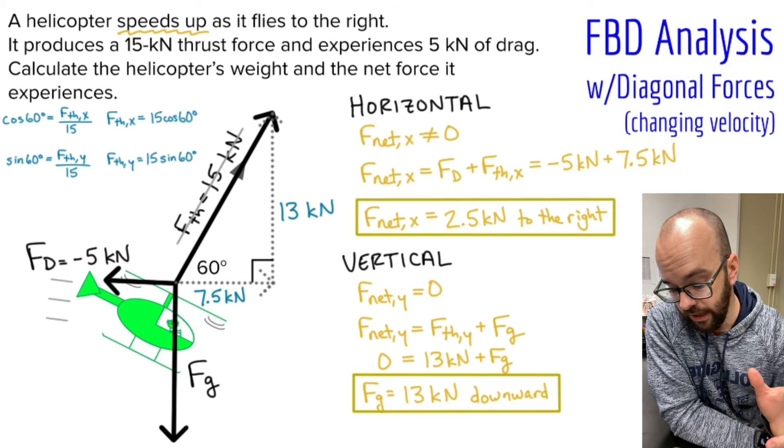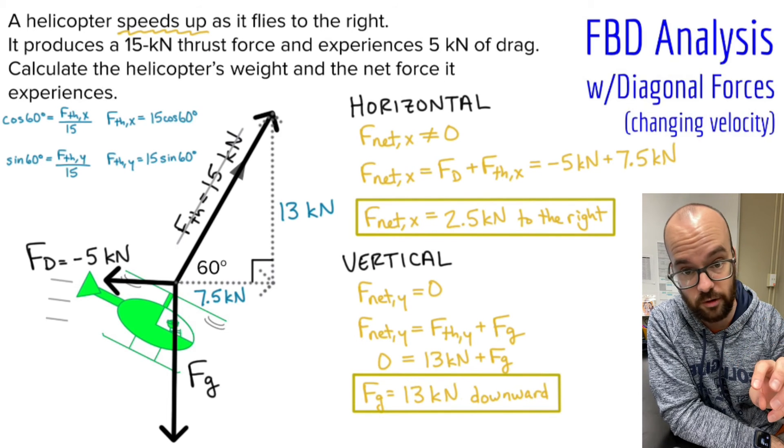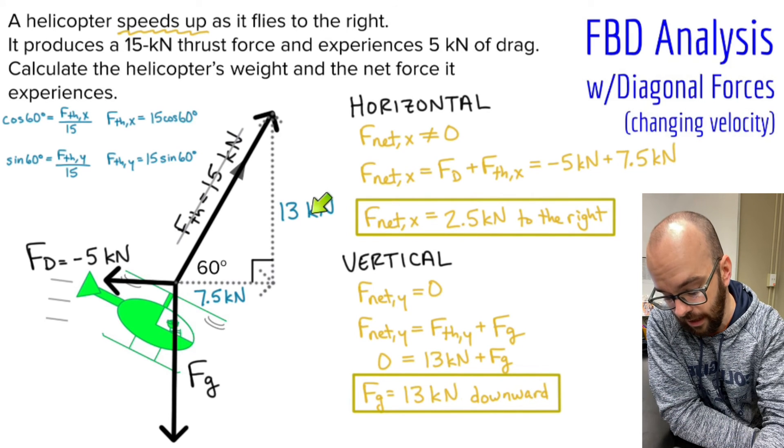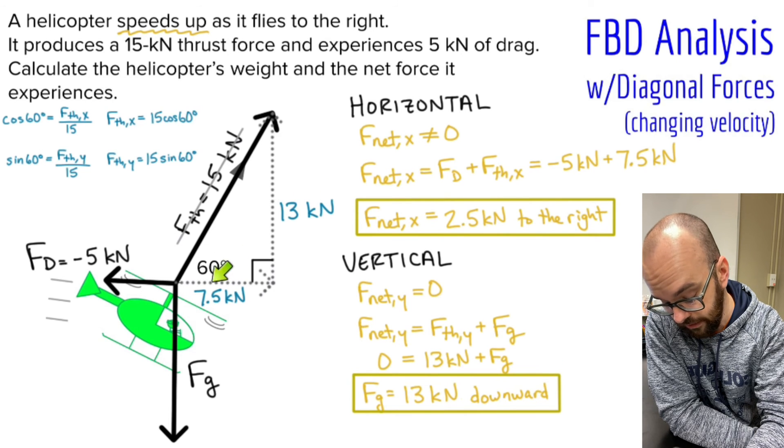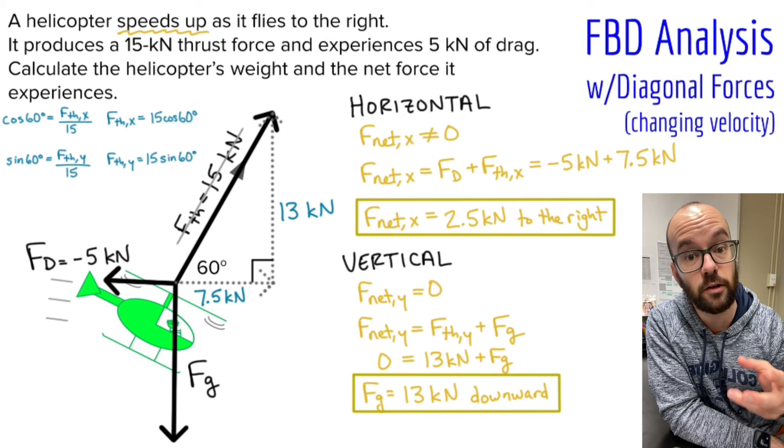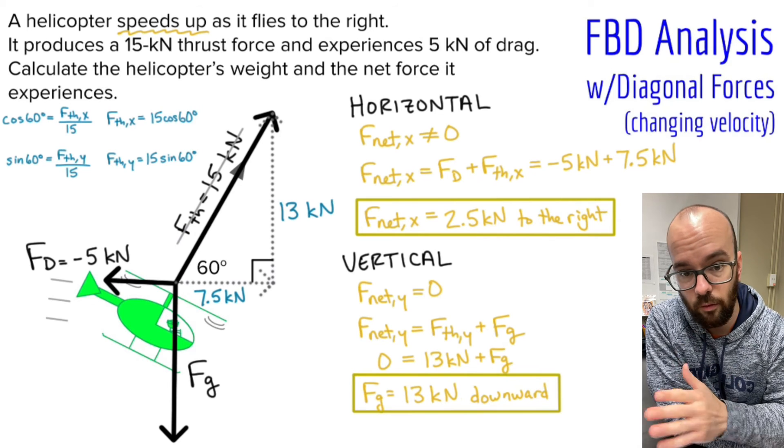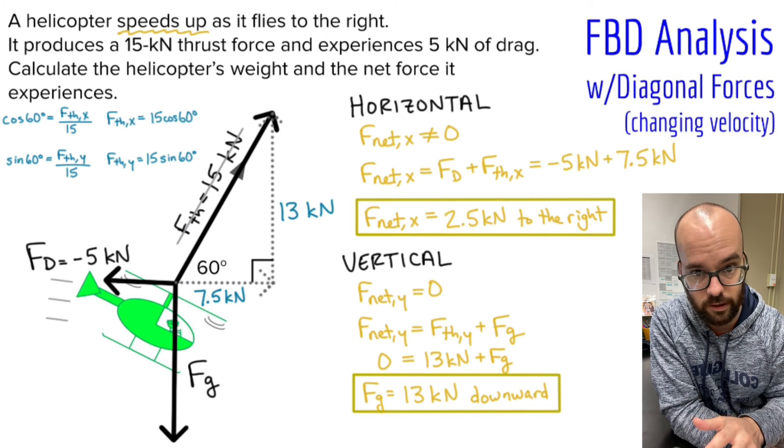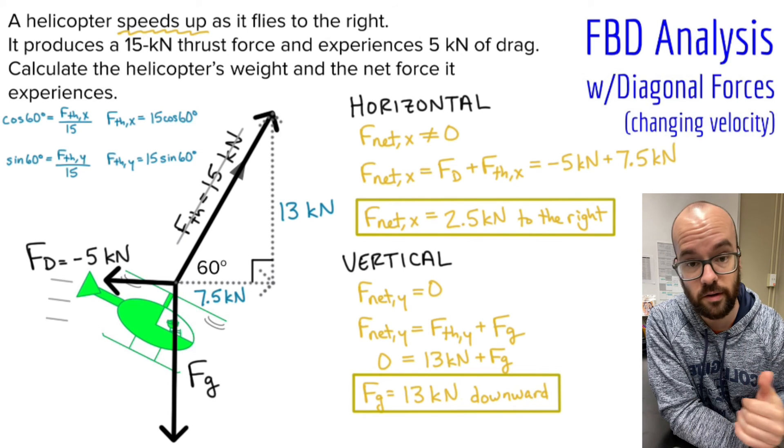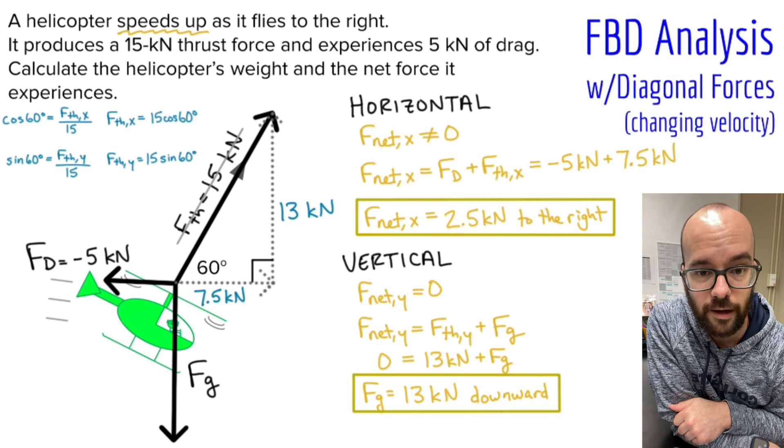All right, so we're done with this problem. Big takeaways: remember, when you have a diagonal force, you need to resolve it into its horizontal and vertical components, and then never use the magnitude or the number of the diagonal force again after that. You also need to analyze the horizontal and the vertical completely separately. Notice, I never added any vertical force, like this 13, to any horizontal force, like the 7.5 or negative 5. You'll never add a vertical force to a horizontal force. If you needed to do that, you would need to do it with a vector addition diagram. So remember, never add the horizontals to the verticals. Analyze them completely separately. If the object is speeding up or slowing down or changing directions, then you know one of your Fnets in horizontal or vertical won't be zero. But if it's not speeding up or slowing down in a particular direction, then the Fnet equals zero for that direction. Good luck analyzing some free body diagrams.